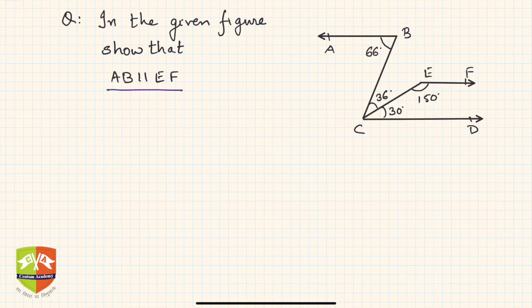If AB has to be parallel to EF and CD is a third line, if we somehow prove that both AB is parallel to CD as well as EF is parallel to CD, then from this logic we can say AB is parallel to EF.